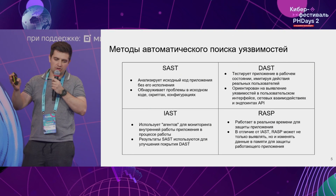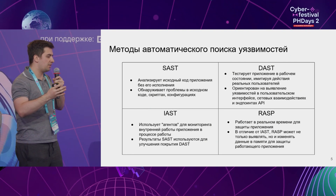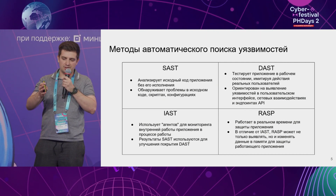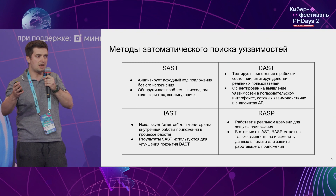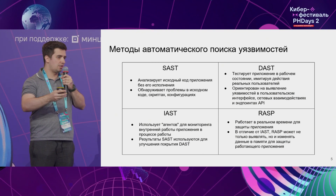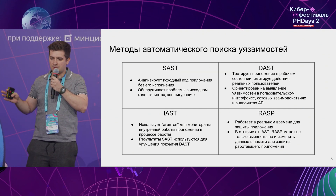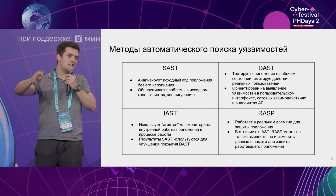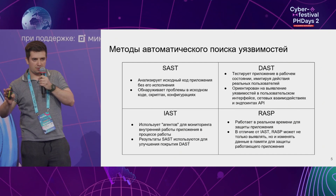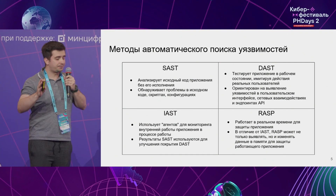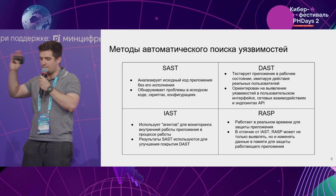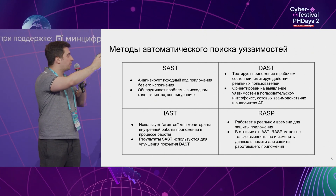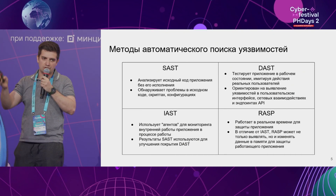Some years ago, this problem was not yet the focus of attention. Either apps were not tested for vulnerabilities at all, or they performed some minimal manual testing, which was not sufficient. Then we proceeded with methods of automatic vulnerability detection, which increases the chance of identifying critical vulnerabilities in your applications. Today there are a multitude of various methods. This slide lists the key ones, and today we are going to talk about SAST.